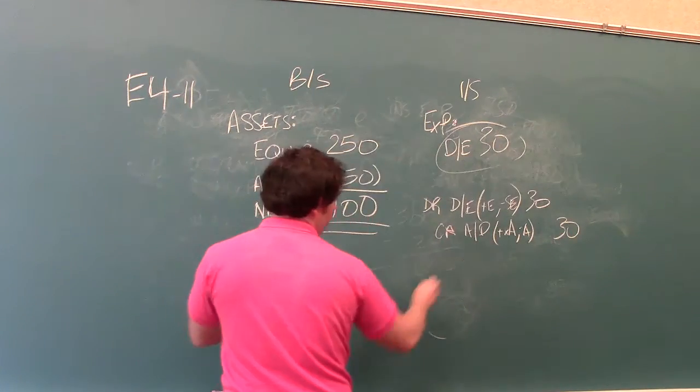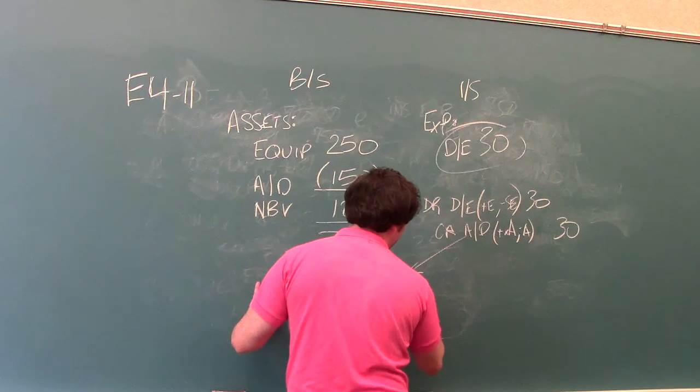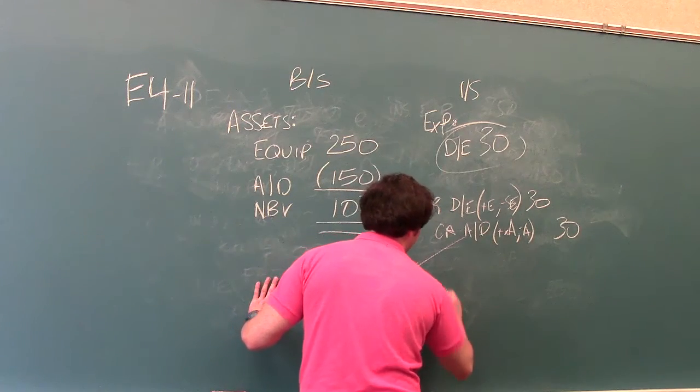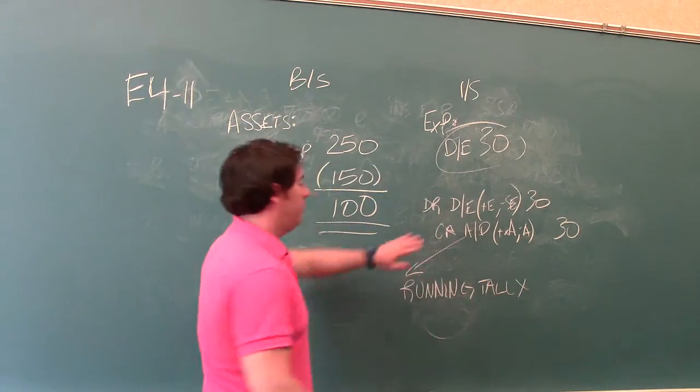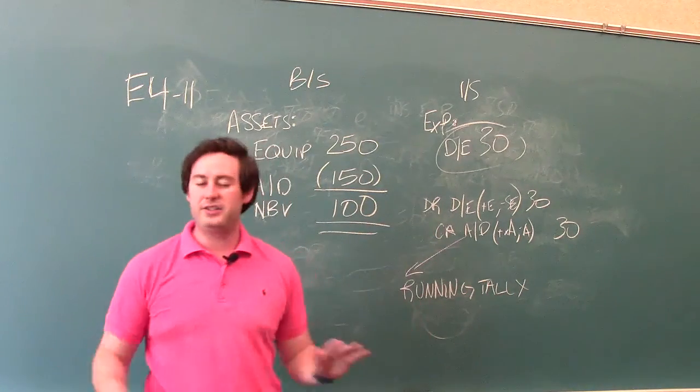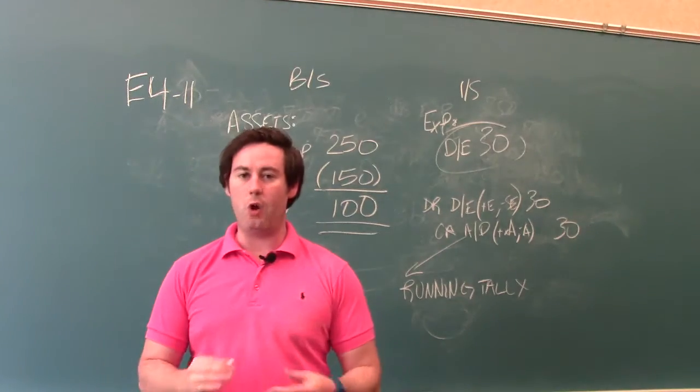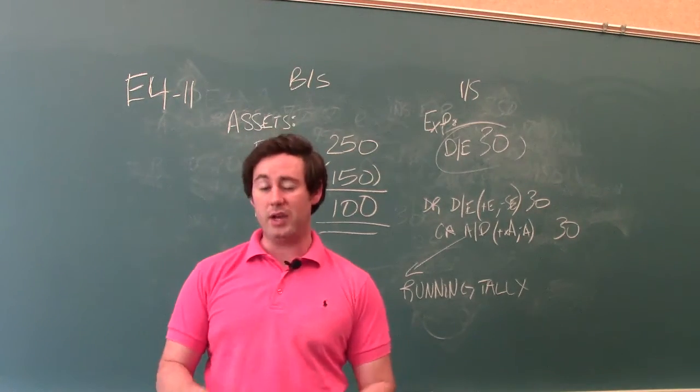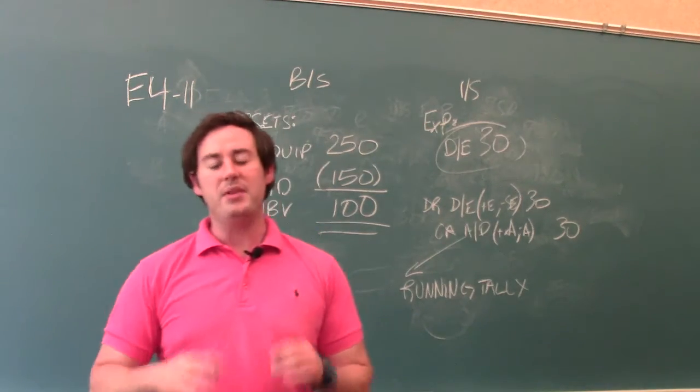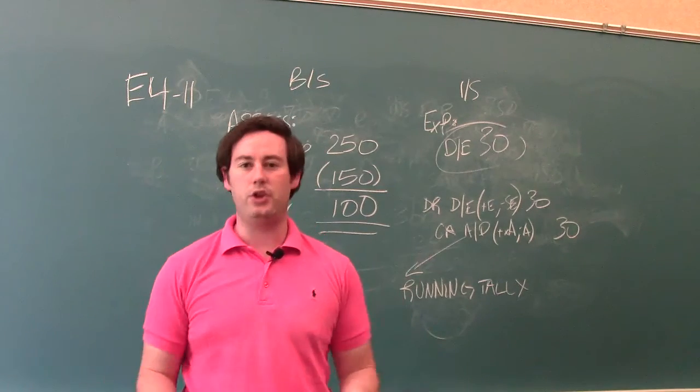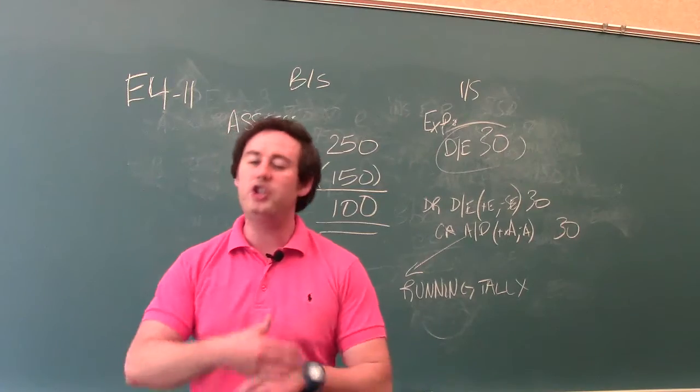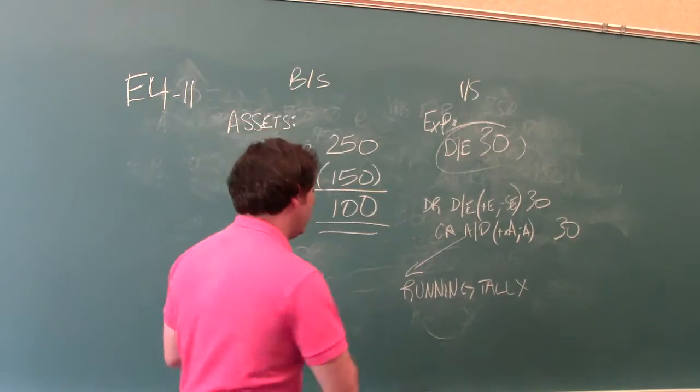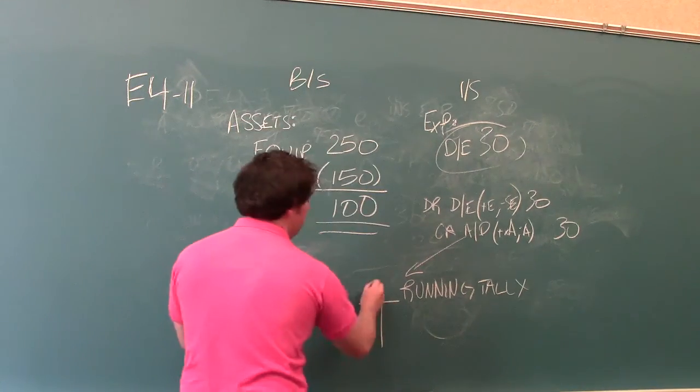The thing I want you to remember is accumulated depreciation is a running tally. The balance sheet accounts, all accounts that show up on the balance sheet are what we call permanent accounts. And we'll get to that when we talk about closing journal entries. But the balance sheet accounts and all the accounts that show up on it, they're considered permanent accounts. They never go away. Unless you write them off, they never go away.